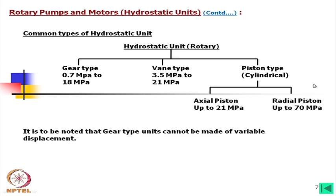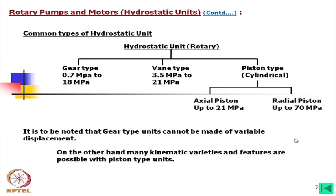Gear type units cannot be made variable displacement. Vane type can be made variable displacement, and both axial piston and radial piston types can also be variable displacement. Many kinematic varieties and features are possible with piston type units.